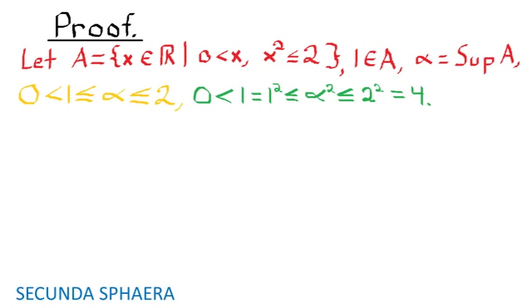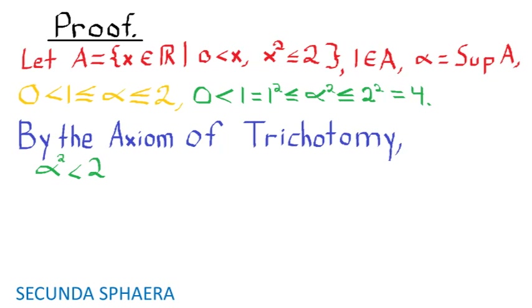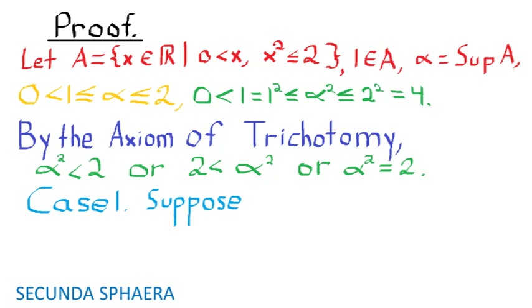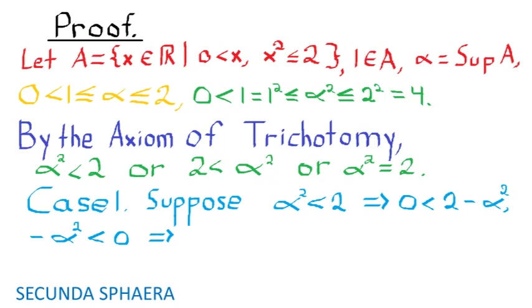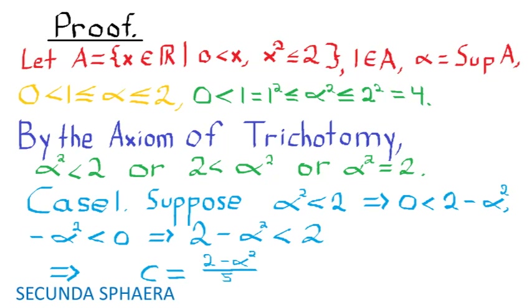This next step may seem difficult at first, but fortunately it only requires discarding 2 out of 3 options. By the law of trichotomy, either alpha squared is less than 2, or 2 is less than alpha squared, or alpha squared equals 2. For case 1, suppose that alpha squared is less than 2. This implies that 0 is less than 2 minus alpha squared. Also, since negative alpha squared is less than 0, it follows that 2 minus alpha squared is less than 2. As a consequence, given c equal to (2 minus alpha squared) over 5, c is greater than 0 and less than 1.